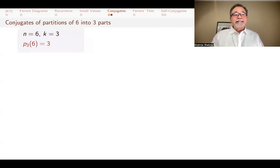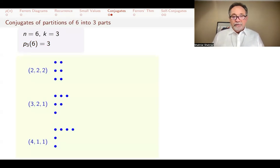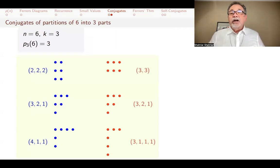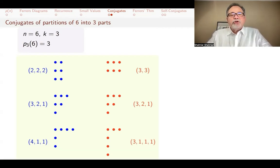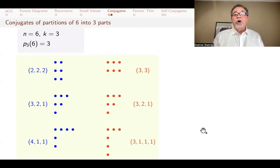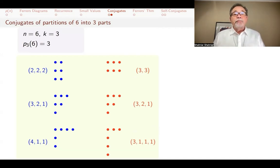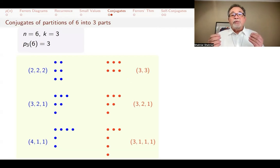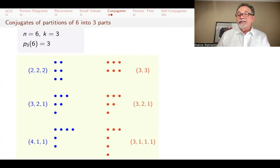Let's look at an example. If n is 6 and k is 3, from our table the number of partitions of 6 into 3 parts is 3: these are 2, 2, 2; then 3, 2, 1; and 4, 1, 1. Now let's find their conjugates by transposing. You get 3, 3; then 3, 2, 1; and 3, 1, 1, 1. Taking all partitions of 6 into 3 parts and finding their conjugates, the number of parts changes — sometimes 2, sometimes 4. But because the originals all had 3 parts, all conjugates will have their largest part equal to 3. And transposing a partition with largest part 3 gives a partition of 6 into 3 parts.